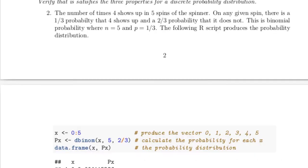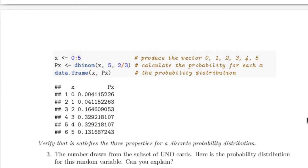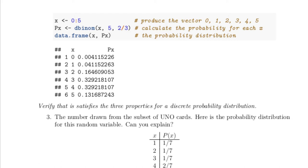Now consider the probability distribution for the random variable looking at the number of times that four shows up in five spins of the spinner. An R script is provided in the handout. First we build a vector containing all of the possible answers — this '0 colon 5' is a short way in R of building the vector containing 0, 1, 2, 3, 4, and 5. You can use any integer colon any other integer and R will build the vector from start to end.